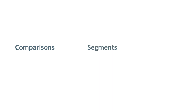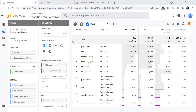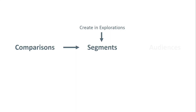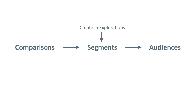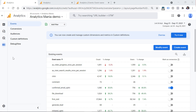Finally, let's compare the creation process. To create a comparison, do that in any standard report of Google Analytics 4. For segments, you can click the Explore button in the comparison to create an exploration report with comparisons turned into segments, or create a segment directly in an exploration by clicking the plus icon next to Segments. For audiences, you can create them by building a segment and enabling the Build Audience checkbox, or by going to Configure and then the Audiences section in the left sidebar.